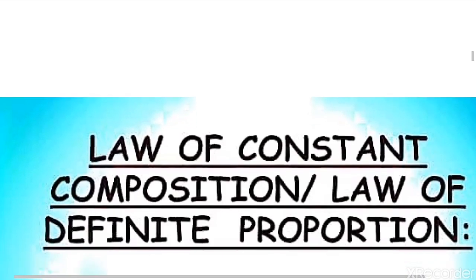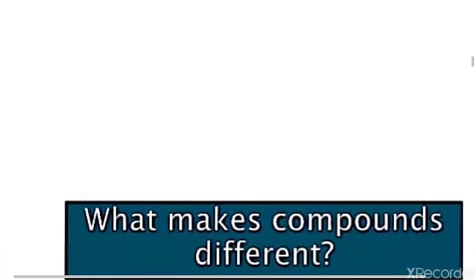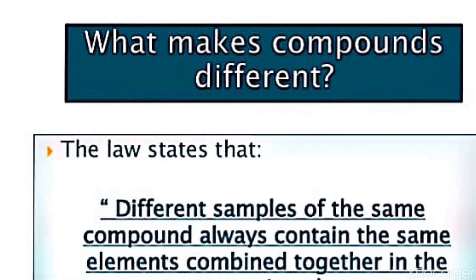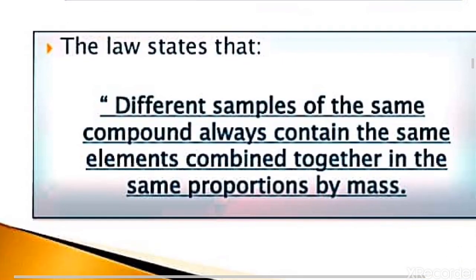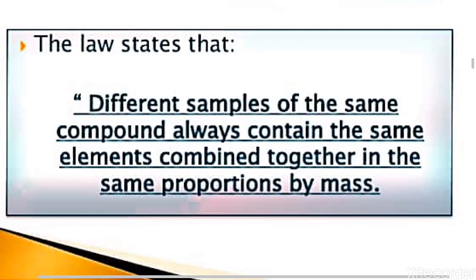The second law is the Law of Constant Composition, or Law of Definite Proportion. This law was put forward by scientist Joseph Proust. According to this law, different samples of the same compound always contain elements combined together in the same proportion by mass. Even if you change the source, the compound composition will remain the same.